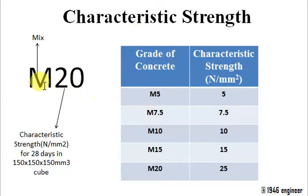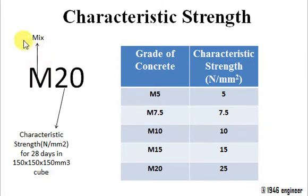So what does the word M in M20, M30 mean? M is nothing but it represents the word 'mix'. So we call it M20, M30. What does the numerical 20 actually mean?